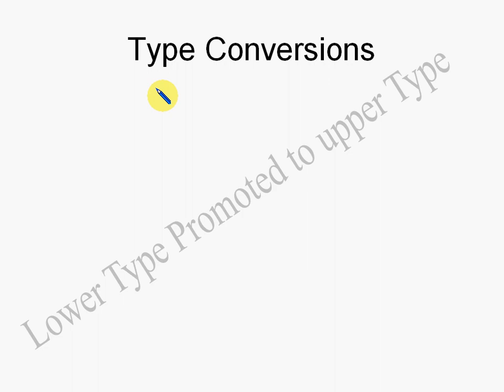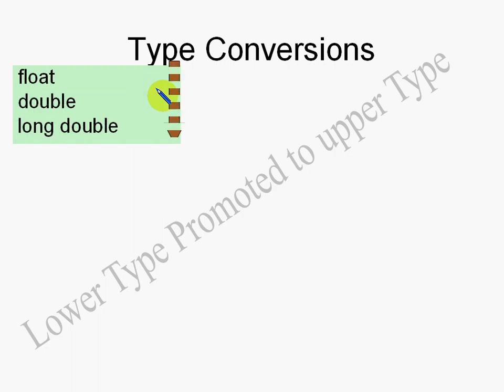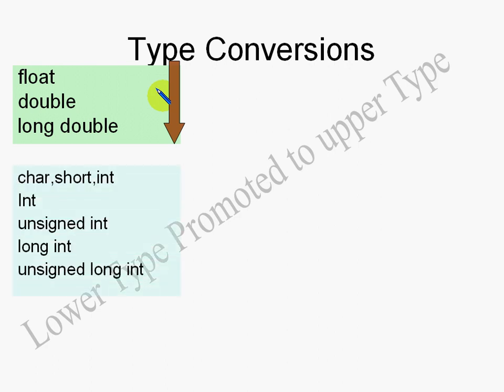The golden rule of type conversions is: the lower type always gets promoted to the upper type. For floating point types, float is the lower type and long double is the upper type. If any expression has a long double, everything else gets converted to long double. For integer types, unsigned long int is the upper type — if you have an unsigned long int, everything else gets converted to unsigned long int.